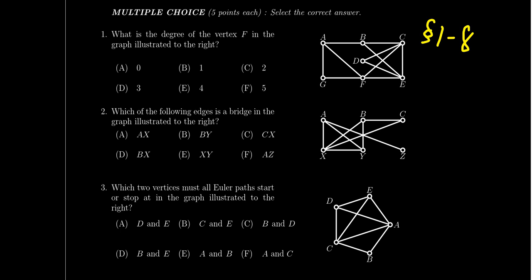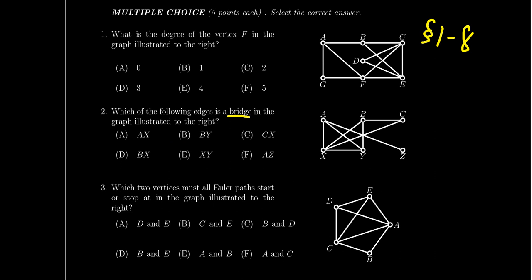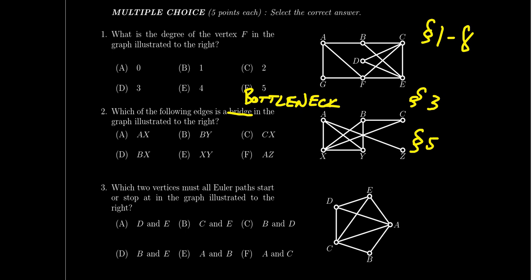Question number two gives you a picture of a graph and asks you to correctly identify either a bridge or a bottleneck. A bridge is an edge which, if removed, would disconnect the graph. The question asks which of the six listed edges is a bridge — by process of elimination, find the one bridge listed. This question could also be modified to ask about bottlenecks — a bottleneck is a vertex which, if removed, would disconnect the graph. Bridges were introduced in lesson three; bottlenecks in lesson five.